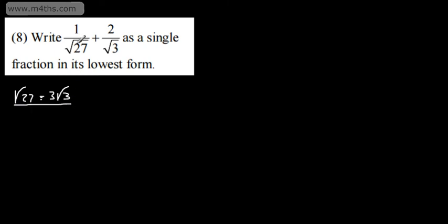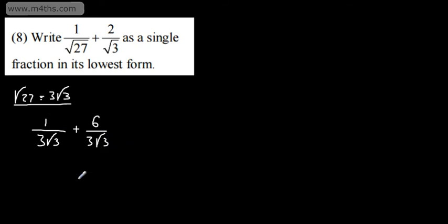We've got a couple of different approaches. I'm going to do both methods, and you can decide which you prefer. I'm going to write that the root of 27 can be written as 3 root 3 — we've seen this in a previous video. So I'm going to have 1 over 3 root 3, and I'm going to add to that 2 over root 3. If I multiply numerator and denominator by 3, I've got an equivalent fraction, so that is 6 over 3 root 3. If I now add the fractions, the denominators are the same, so all we need to do is add the numerators, and we can write that as 7 over 3 root 3.